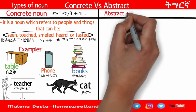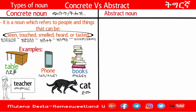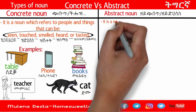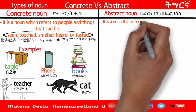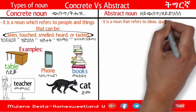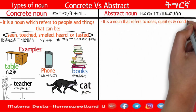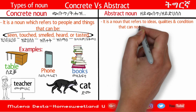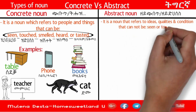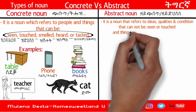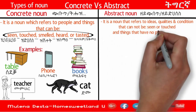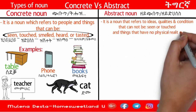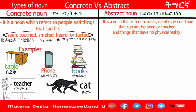Abstract noun. So what is an abstract noun? It is a noun that refers to ideas, qualities, and conditions that cannot be seen or touched — things that have no physical reality.